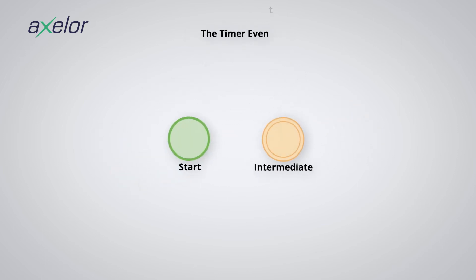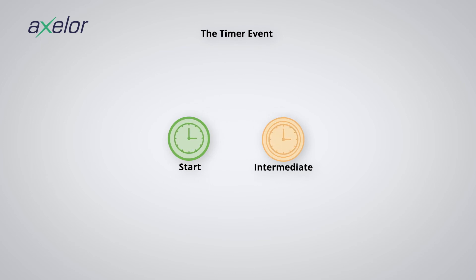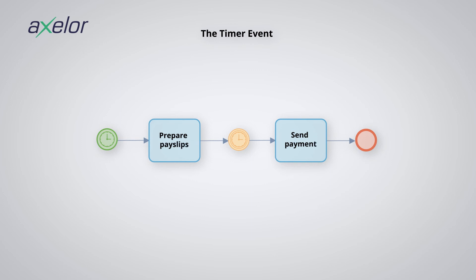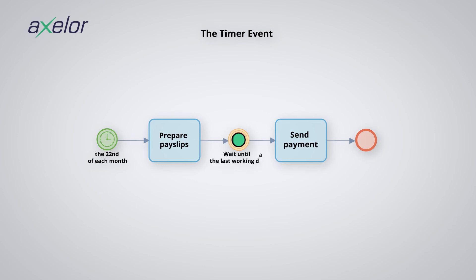The timer event. These are events represented with a clock pictogram. They are used to give a temporality to the process. In this example, the timer event is triggered on the 22nd of each month, so a token will be automatically created every 22nd of the month. Then when the pay slips are ready, the process waits for the last working day to continue. Note that the timer events can be characterized by a cycle, a duration, or a date.